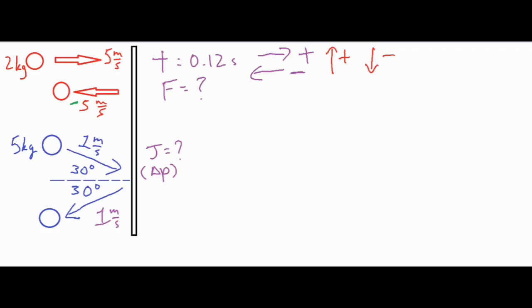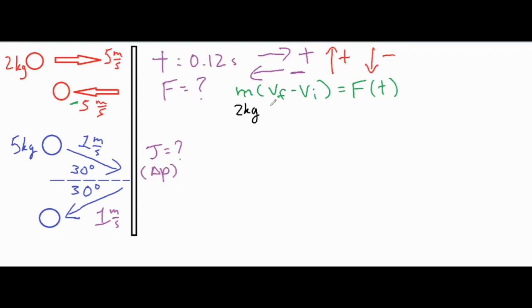We are going to find the change in momentum. The change in momentum is mass times delta-v, which is the final velocity minus the initial velocity — that is the impulse. The impulse can also be found by force times time of impact. We have two kilograms for the mass. The final velocity is negative five meters per second minus the initial velocity of positive five meters per second.